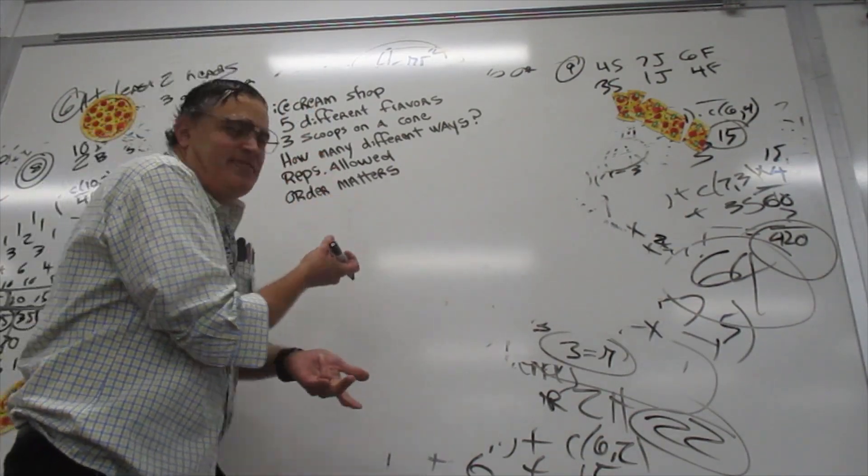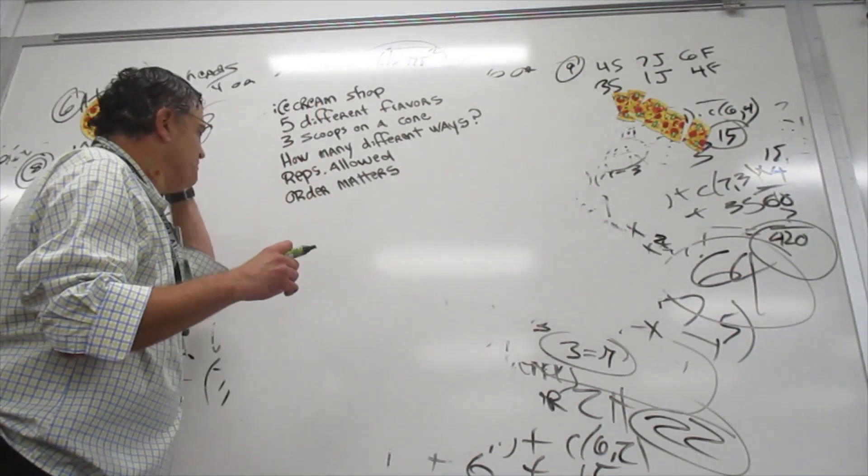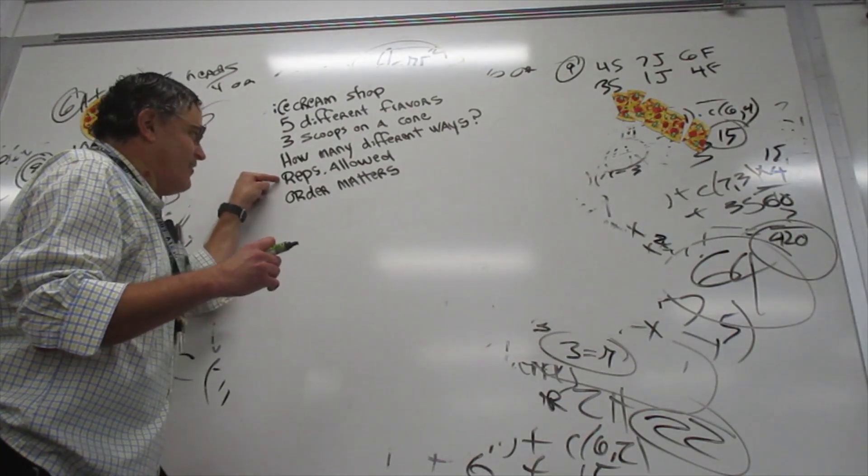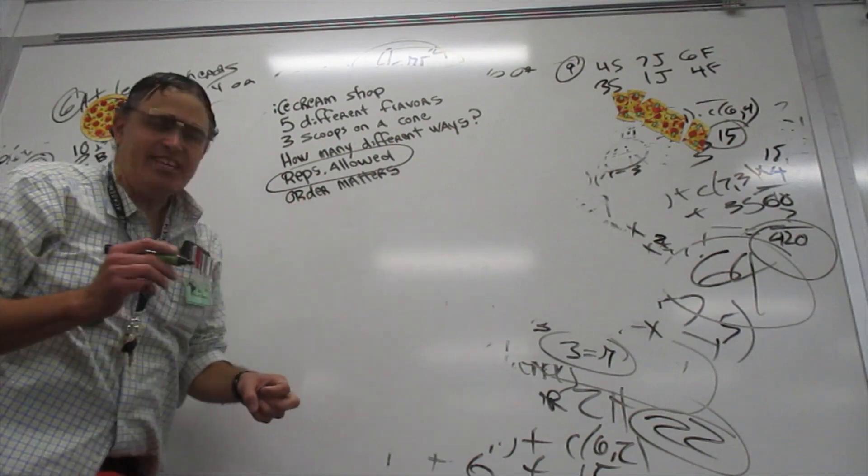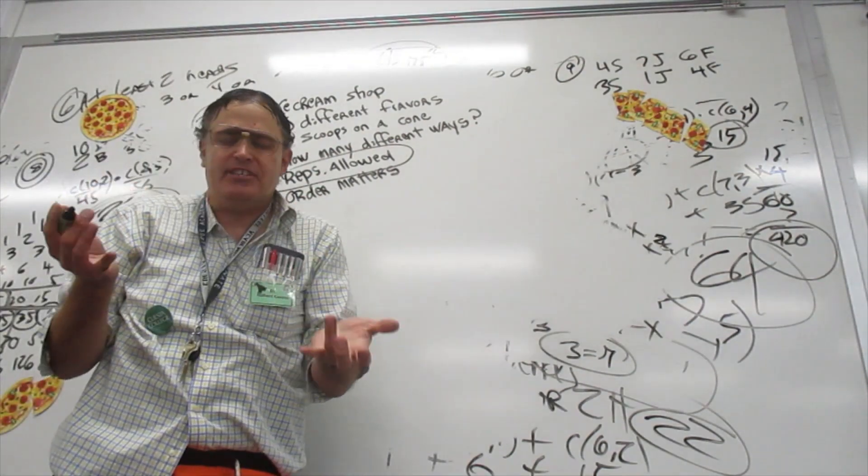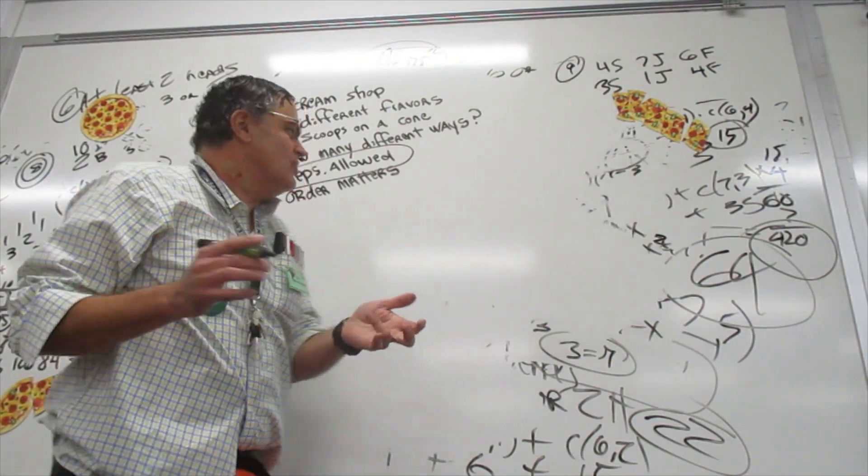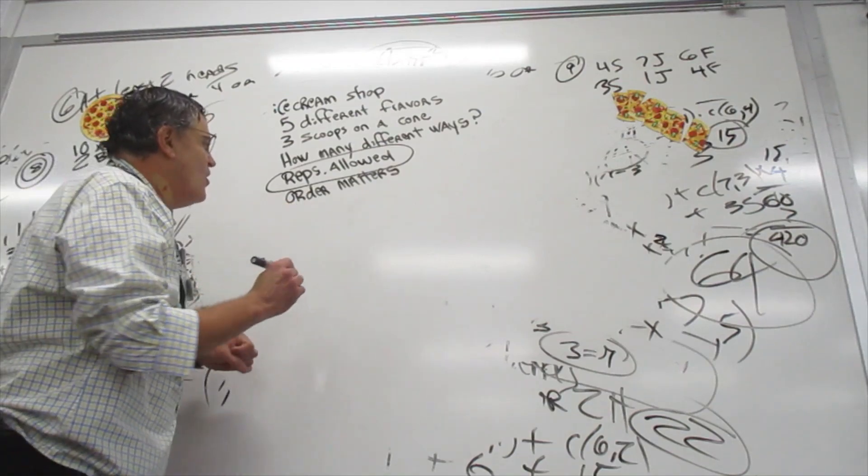How many different ways can you do that where reps are allowed and order matters? We were kind of used to doing reps are not allowed. This is the first time we're taking a look at permutations and combinations where reps are allowed. This one's a little easier. Order matters.